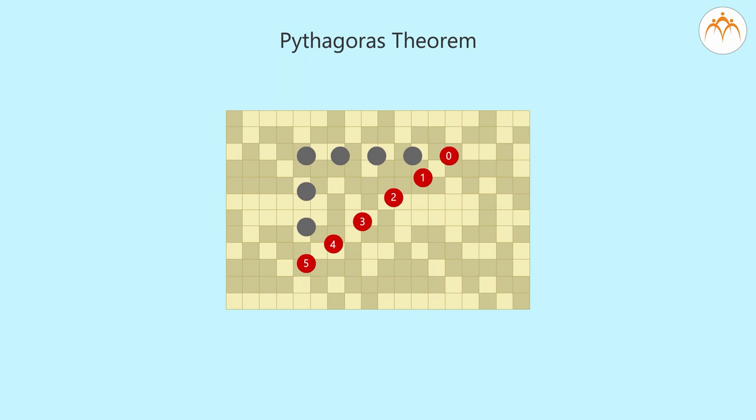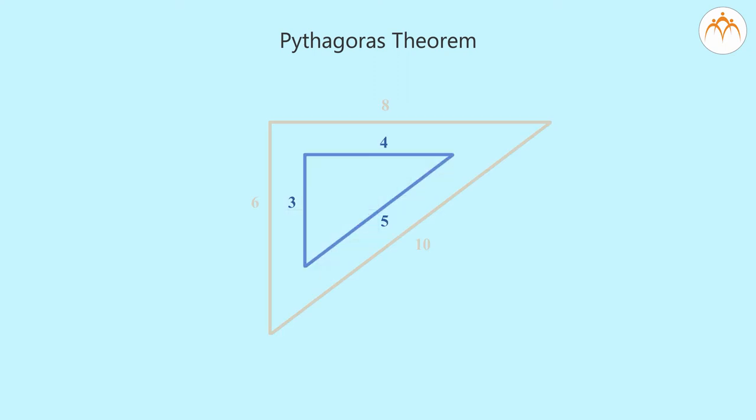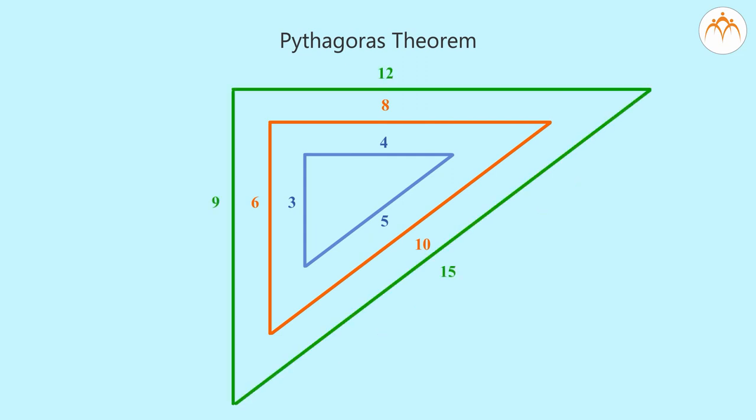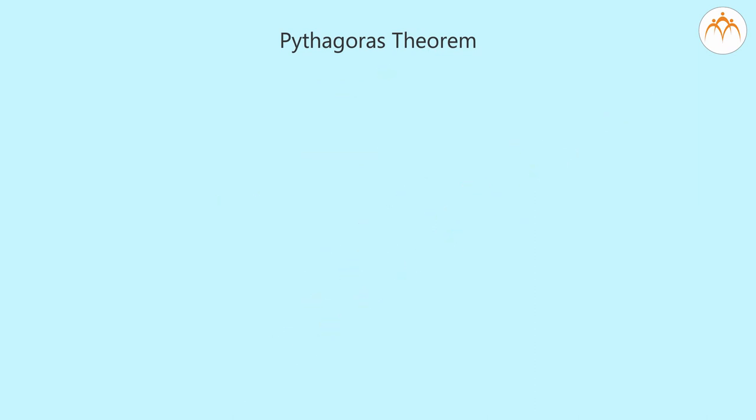In the first example, we got a right angled triangle with all sides with natural numbers. Can we have more such triangles? 6, 8 and 10, 9, 12 and 15. The triangles formed by multiplying the sides of the triangle 3, 4 and 5. However, there are other triplets which give right angled triangle with these sides. A few are 5, 12, 13. That is 25 plus 144 gives 169.